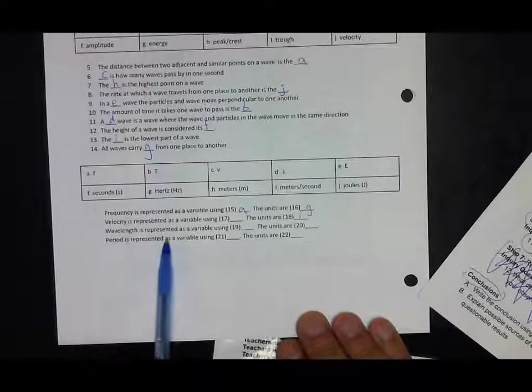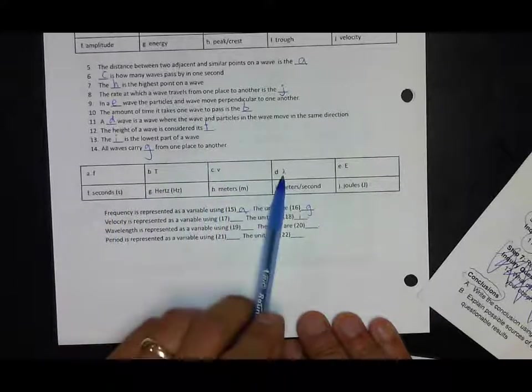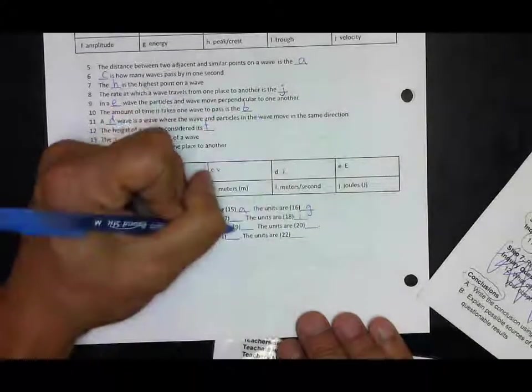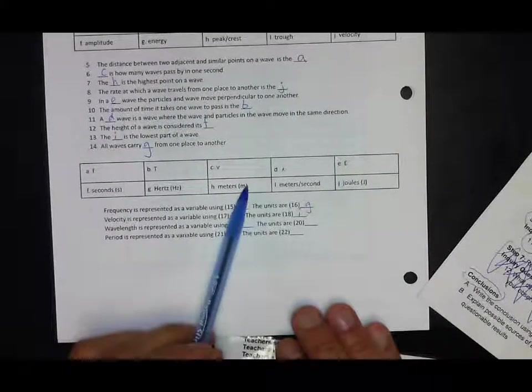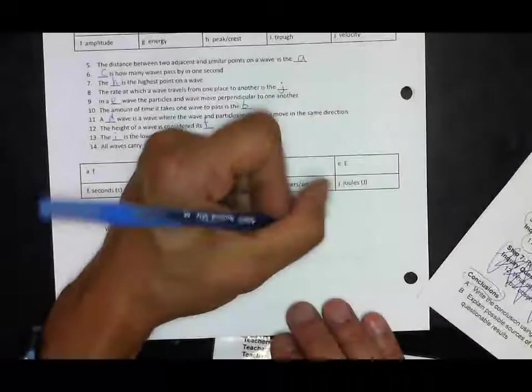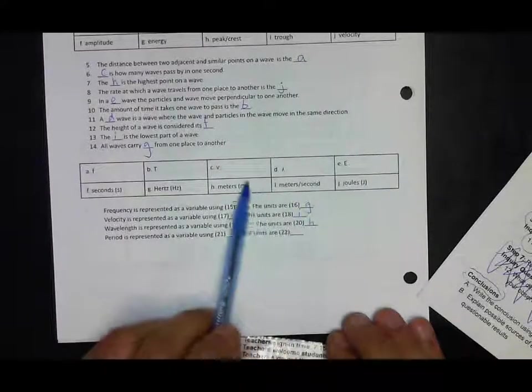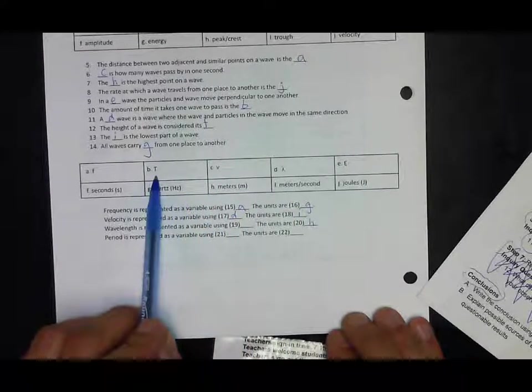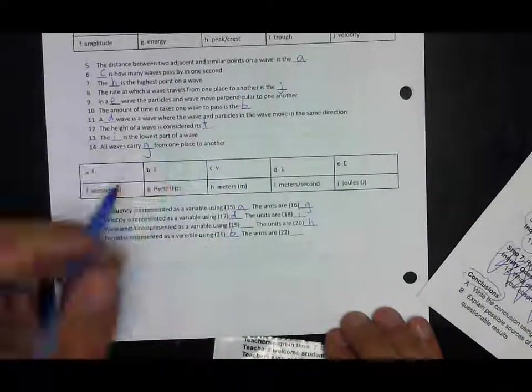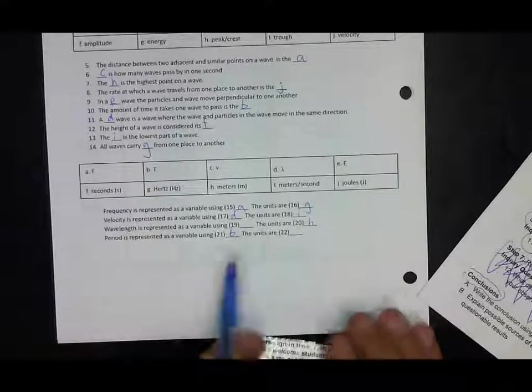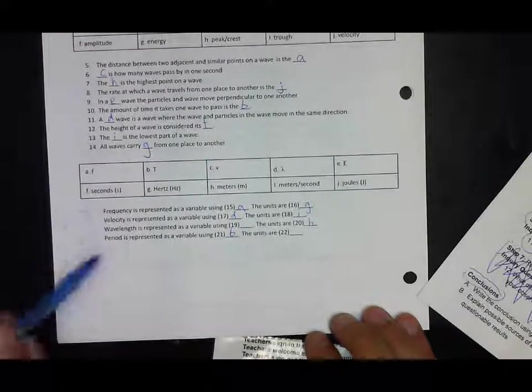Wavelength is represented as a variable using lambda, that's D, and the units for wavelength, that's a length, it's a distance, so we measure that in meters. The period is represented as a variable using T, and we measure that since it's the time for one wave to pass in seconds.